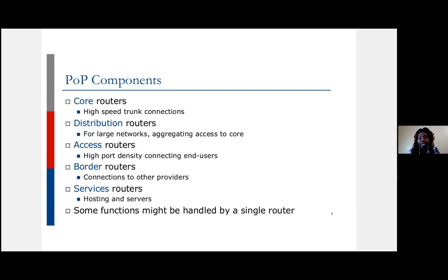A point of presence is basically somewhere you've set up your network — it could be your office server room or a cabinet in a data center. In your PoP you'll probably have a core router to connect everything, distribution routers to aggregate services across the network, access routers where customers connect to get their services, and border routers for connecting to other providers — either your transit provider or another ISP that carries you.